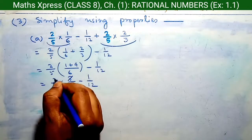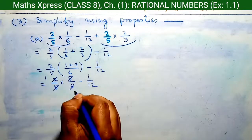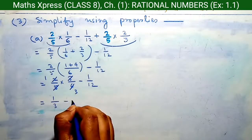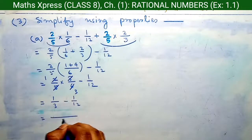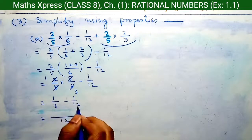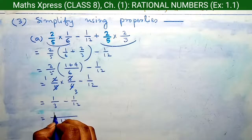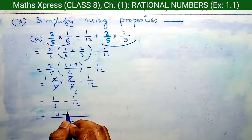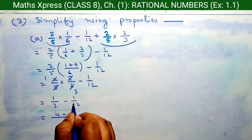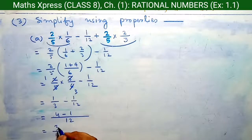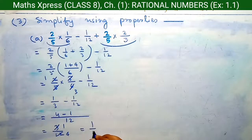So we have 2 by 5 into 5 by 6 minus 1 by 12. Here we cancel 5 and 5, giving 1 by 3 minus 1 by 12. We take LCM of 3 and 12, which is 12. So 4 into 1 equals 4, minus 1 into 1 equals 1, giving 3 by 12. Simplifying, 3 by 12 equals 1 by 4. The answer is 1 by 4.